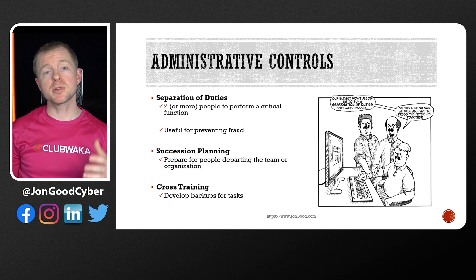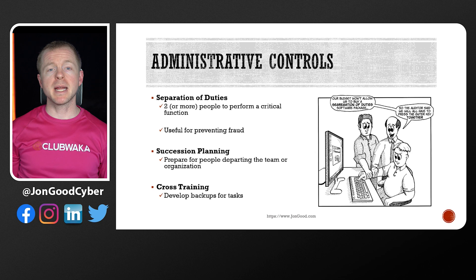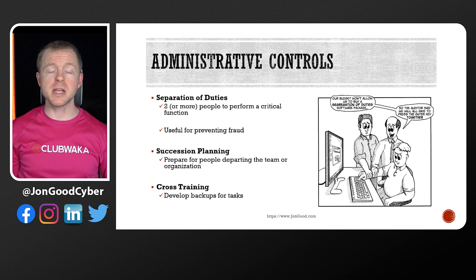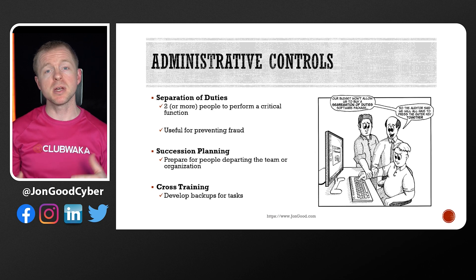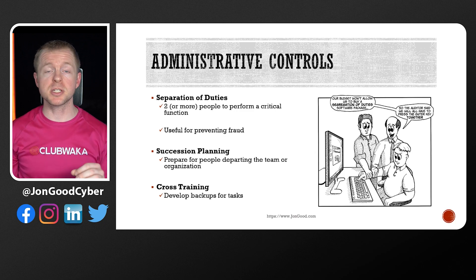A great example would be the person configuring systems and the person auditing being two different people. Succession planning allows us to be ready for somebody who might leave our organization. Cross-training is where you have people learn secondary roles so that at a moment's notice they can step in — cross-training is also valuable for when employees are sick, not just when they leave the organization.